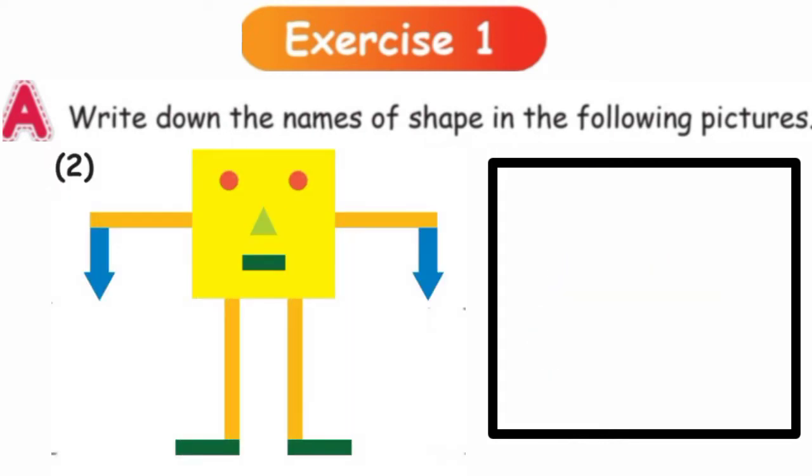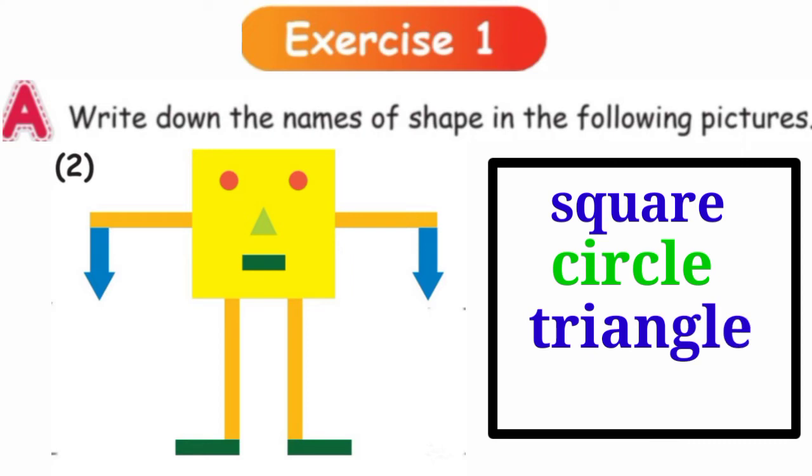Next, see the second picture. Let's write the shapes. Face is in what shape? Square. Its eyes are in circle. And its nose and hands are in what shape? Triangle. And its mouth and legs are in what shape? Rectangle.